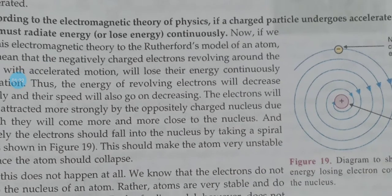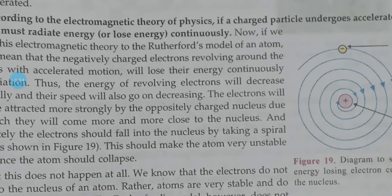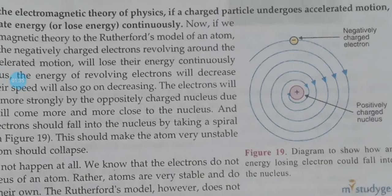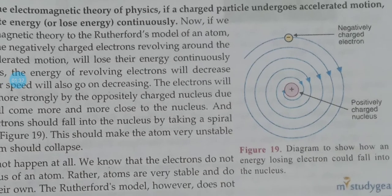So, if we consider electrons moving in circular paths, then electrons will lose their energy — that is, kinetic energy — gradually, and a time will come when the electron falls into the nucleus.